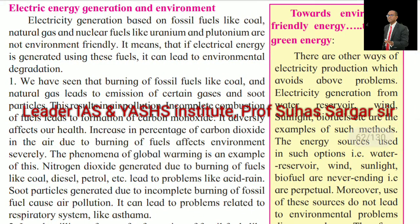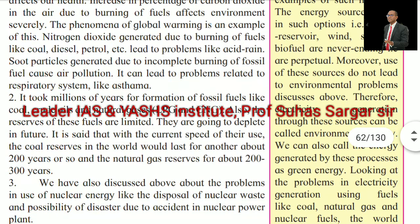Electrical energy generation and environment: Electricity generation based on fossil fuels like coal, natural gas, and nuclear fuels like uranium and plutonium are not eco-friendly. If electrical energy is generated using these fuels, it can lead to environment degradation. Burning of fossil fuels leads to emission of certain gases and soot particles, resulting in air pollution. Incomplete combustion of fuel leads to formation of carbon monoxide, which adversely affects health. Increase in percentage of carbon dioxide in the air due to burning of fuels affects the environment severely — the phenomenon of global warming is an example. Nitrogen dioxide generated due to burning of fuel like coal, diesel, petrol leads to problems like acid rain.